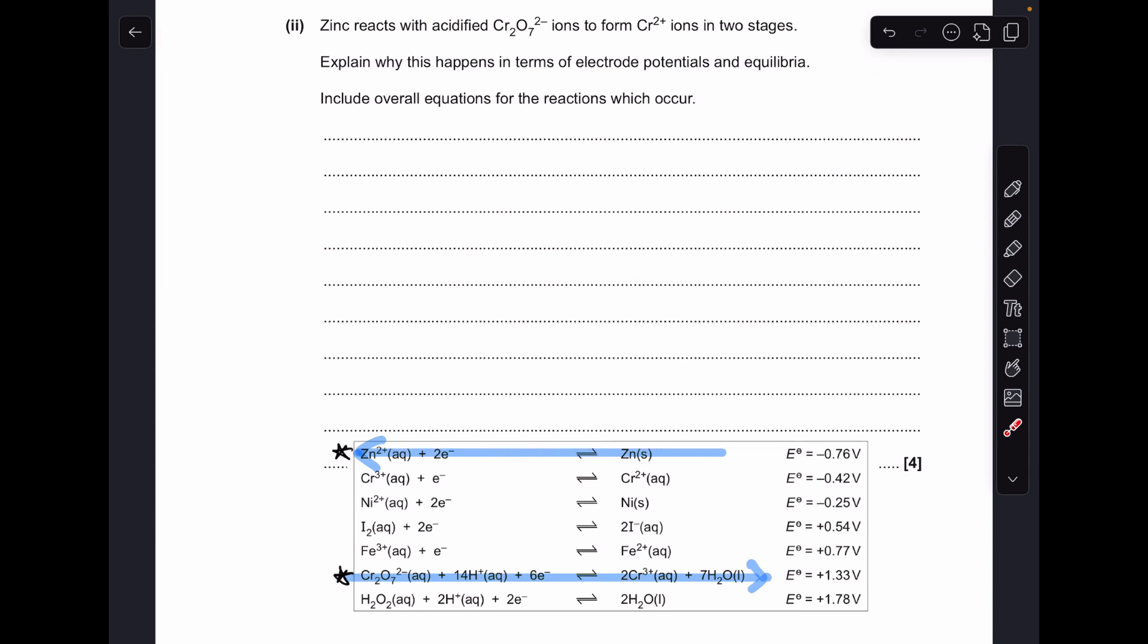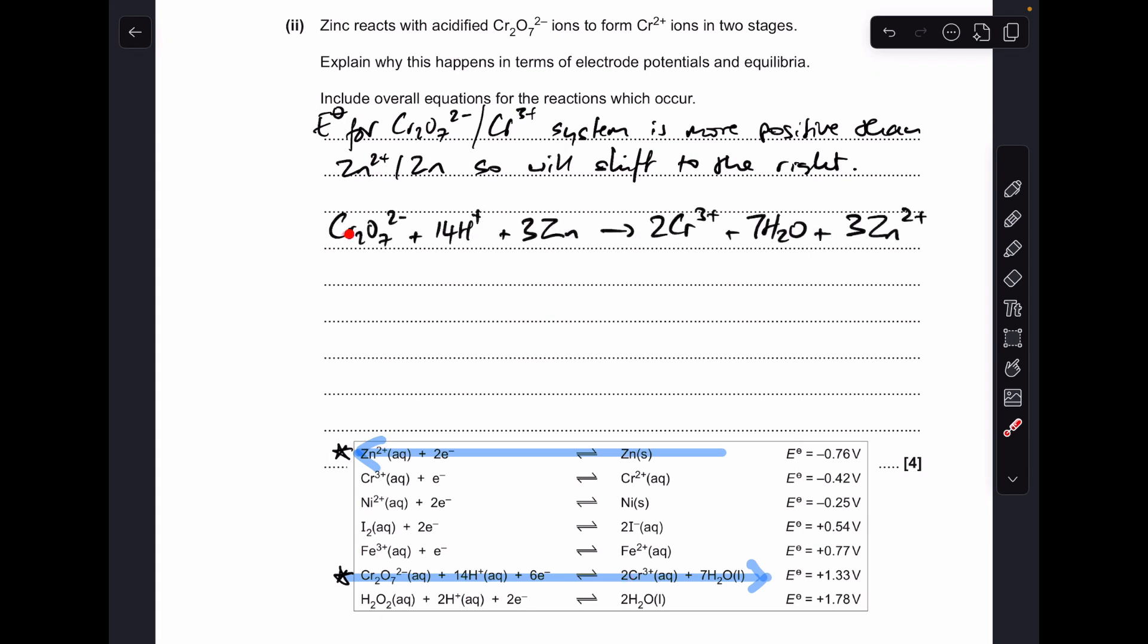So to get this business of equilibrium in, we're just going to use the word shift. So we're going to say this one shifts to the right, and this one shifts to the left. And then the equation for that process, if we look at the electrons, we've got 2 in this one but we've got 6 in this one. So we're going to multiply the zinc half equation by 3 and add it to that one, which gives that overall equation there for the first step.